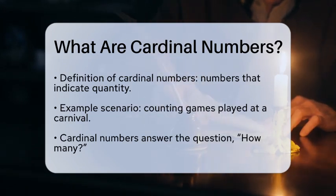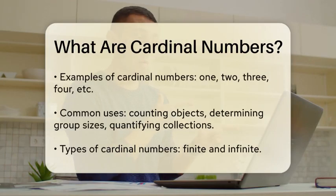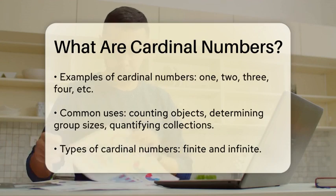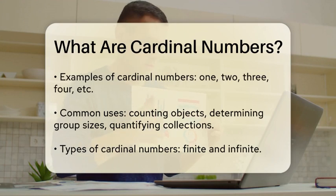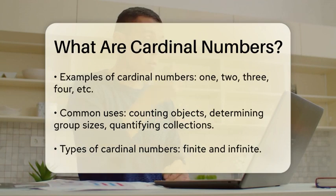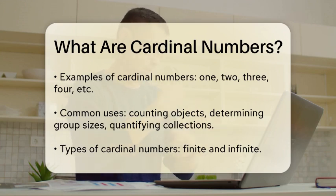Cardinal numbers are the numbers that indicate quantity. They answer the question 'how many.' For example, one, two, three, four, and so on are all cardinal numbers. They are used in everyday situations such as counting objects, determining the number of people in a group, or quantifying items in a collection.